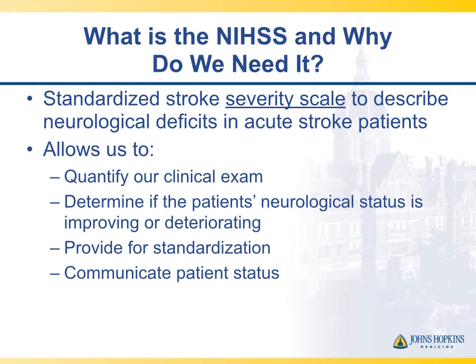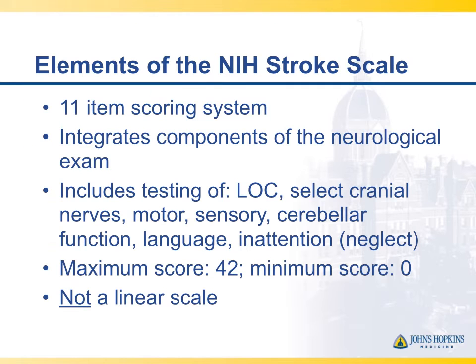The NIH Stroke Scale describes stroke severity. It's a way to quantify the exam, to determine if a patient's improving or deteriorating, and to communicate their status. The scale is based on 11 items that integrate components of the neurologic examination, including mental status, cranial nerves, motor, sensory, and cerebellar functions. It's scored on a scale of 0 to 42, but it's important to note that it's not linear.